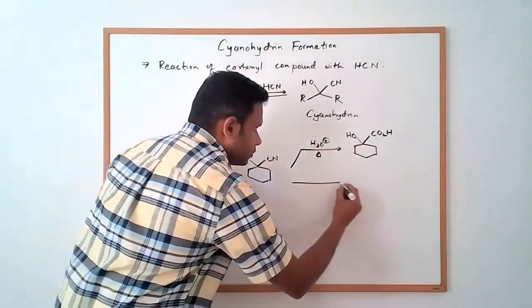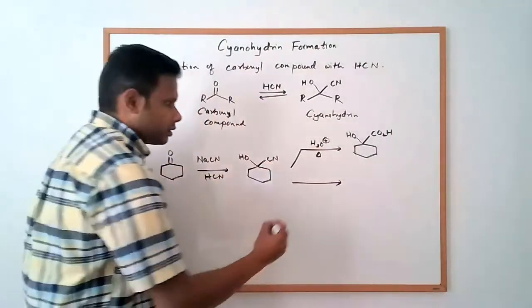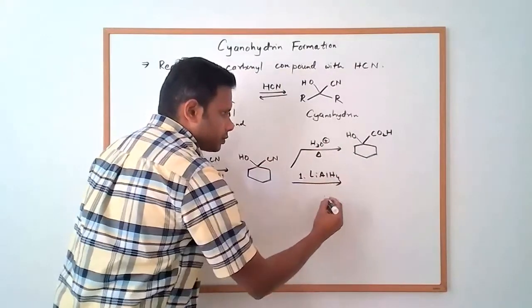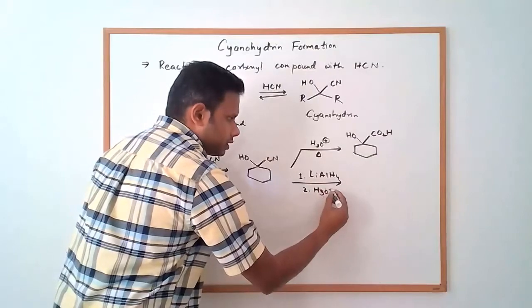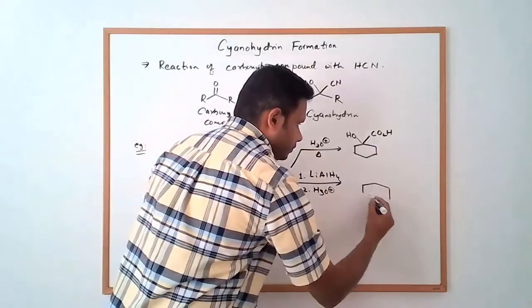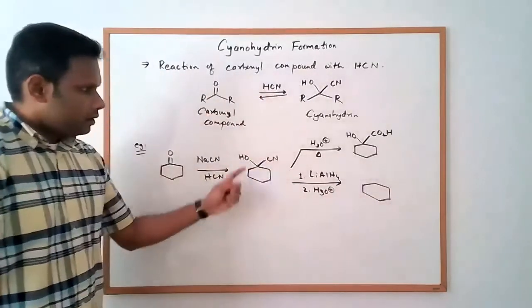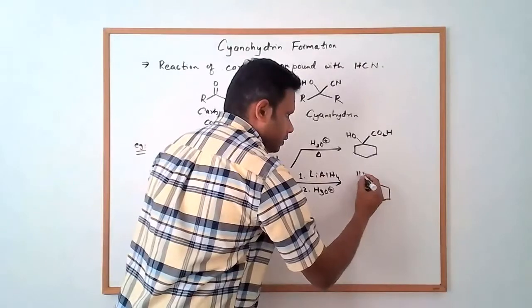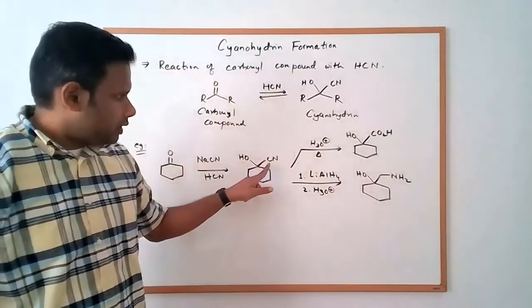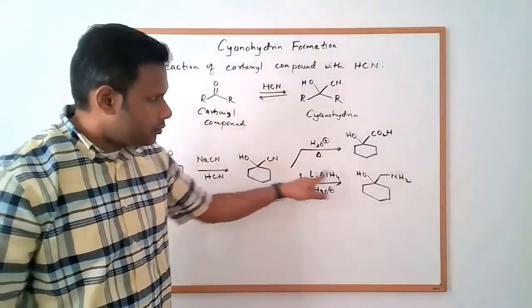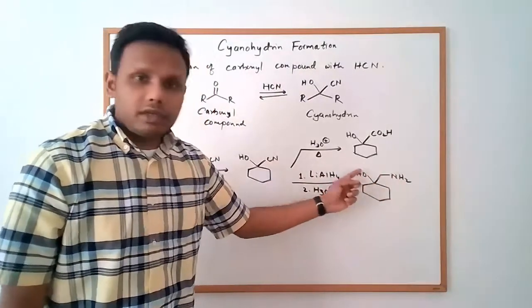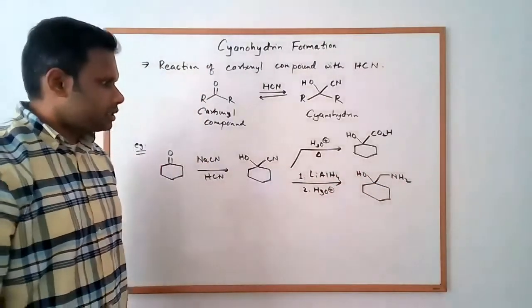Or if you do a reduction of the nitrile. So if you did lithium aluminum hydride, follow it up with an acidic workup, you can convert the nitrile group into an amine. So we have the CN, the carbon here becomes the CH2 and becomes the NH2. So you can have now a primary amine and a hydroxyl group in the same molecule.